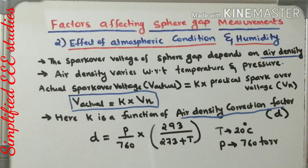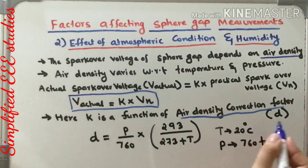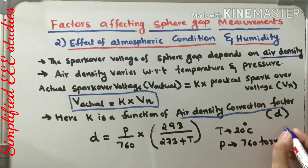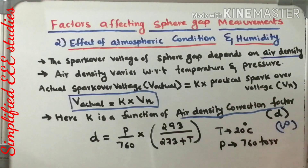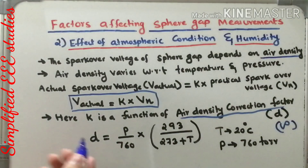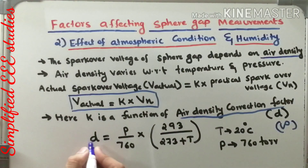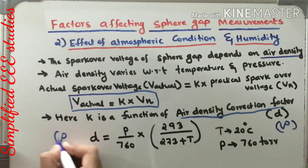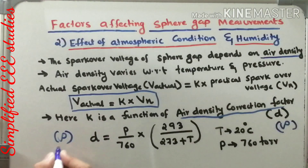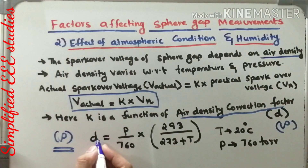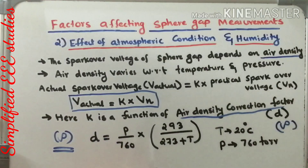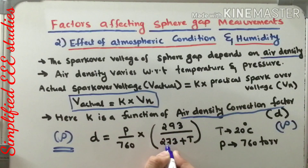The air density correction factor can be represented by the letter D, or alternatively by the symbol rho — both are correct. You can calculate the air density correction factor using the equation: D = (P / 760) × (293 / (273 + T)), where T is temperature in degrees Celsius and P is pressure in mmHg (Torr).